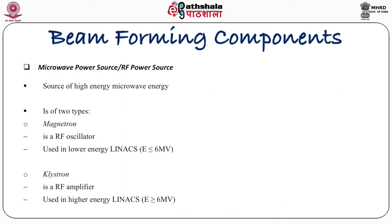The microwave power source, or RF power source, is the source of high energy microwave energy. With the help of this, electron energy is increased. It is of two types: the magnetron, which is an RF oscillator used in lower energy linear accelerators, and the klystron, which is an RF amplifier used in high energy linear accelerators when the energy is more than 6 MeV.